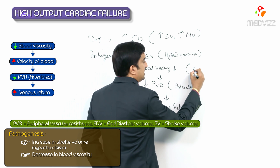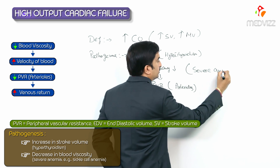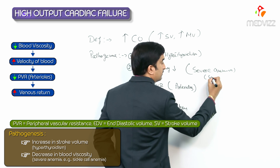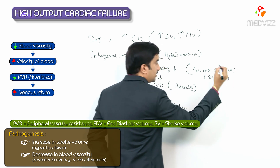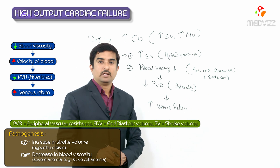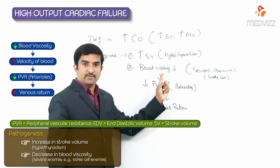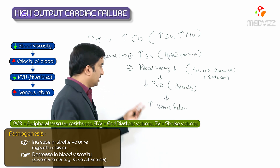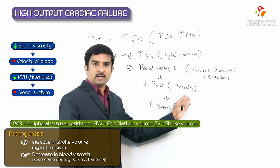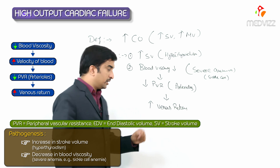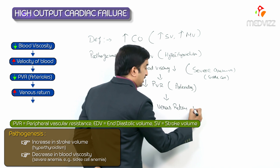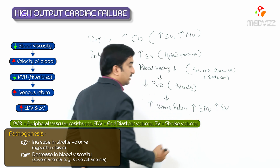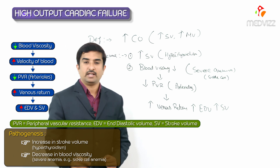The best example of this condition is severe anemia, as seen in sickle cell anemia. In sickle cell anemia, there will be a decrease in blood viscosity because a decrease in the number of red blood cells causes decreased viscosity. This decrease in viscosity causes a decrease in PVR, which causes an increase in venous return to the heart, leading to an increase in end diastolic volume and stroke volume.